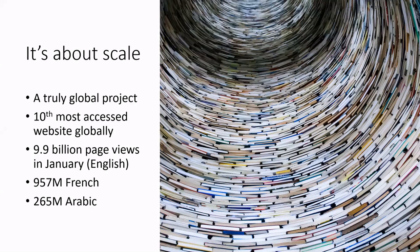If you Google OCLC, you will most likely come to a Wikipedia page about it. The English language version of Wikipedia received almost 10 billion page views just last month. There are over 300 different language versions of Wikipedia, and they receive a smaller portion of traffic but still impressive numbers — especially compared to the web traffic that library organizations receive. So we want to be connected to Wikipedia so that we can then get people connected to libraries.